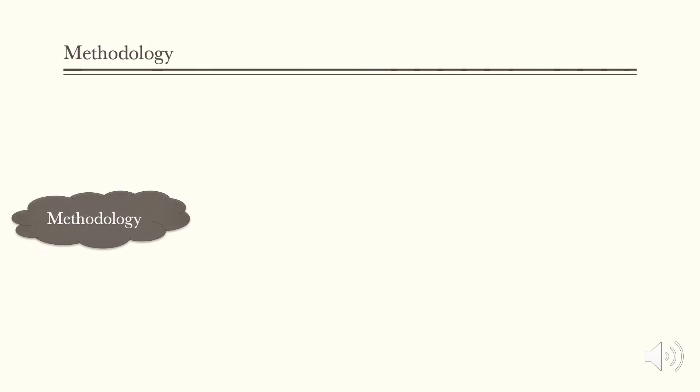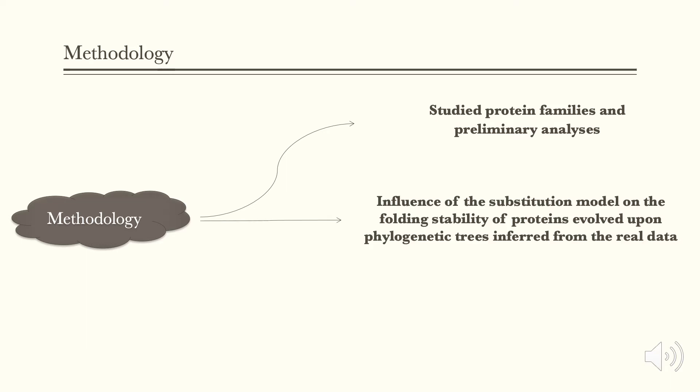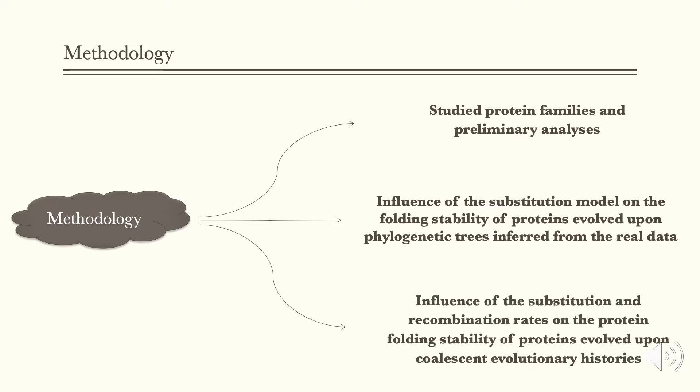The work is divided in three stages. First, a preliminary study of protein families. Next, we analyzed the influence of the substitution model on the folding stability of proteins. And finally, we studied the influence of the substitution and recombination rates on the protein folding stability.